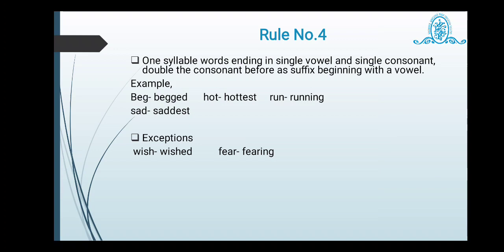In rule number four, one syllable words ending in single vowel and single consonant double the consonant before a suffix beginning with the vowel. So beg. This is the single or we can say one syllable with the vowel or single consonant. Yes, then in case of beg, if we have to attach here E-D, that is suffix begins with a vowel that is E, then we have to write down double letter of G, that is the last letter. Beg, begged. Hot, hottest. Because we are going to make the addition of your suffix E-S-T, but it begins with vowel E. Run, running. Like that, I-N-G. I belongs to vowel letter. Hence, last letter is here double. Sad, saddest. Again, E-S-T. E stands for vowel sound. Hence, last letter D is here double.